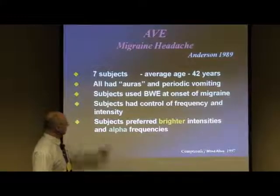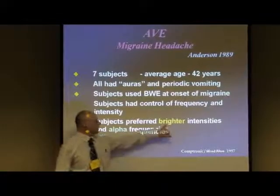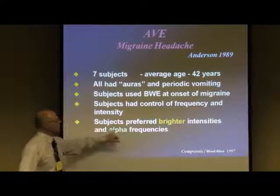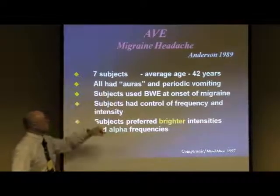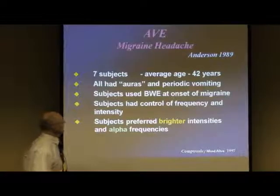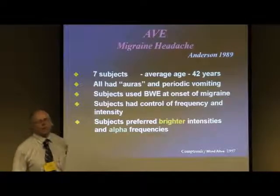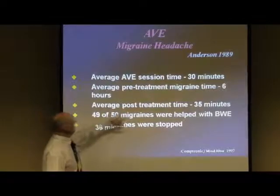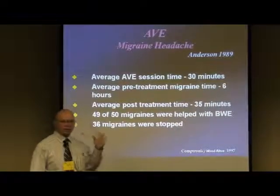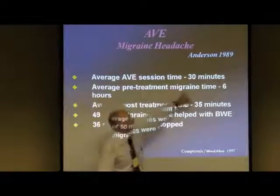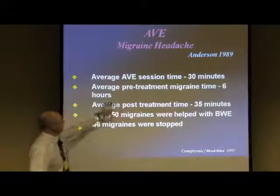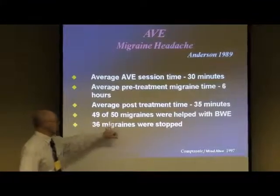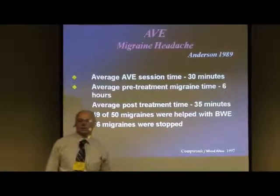Here's a migraine study, and believe it or not, in addition to using alpha frequencies, participants preferred brighter intensities — totally backwards to what migraine is like — but they were dissociating out of their migraine. This was Duncan Anderson out of England. They recorded 49 migraines across seven subjects — roughly seven per person. When they felt the aura coming on, they popped on the gear and ran it in alpha for about 30 minutes. Pre-treatment migraine times were roughly six hours; post-treatment was roughly 35 minutes. 49 of those 50 migraines were helped and 36 were stopped in their tracks.